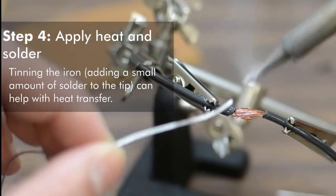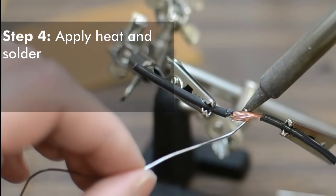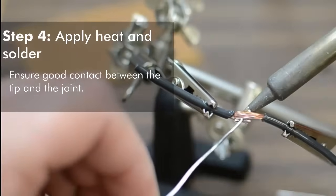Sometimes it helps to tin your iron by putting a small amount of solder on the tip to bridge the air gap between the iron's tip and your components to create better heat transfer.